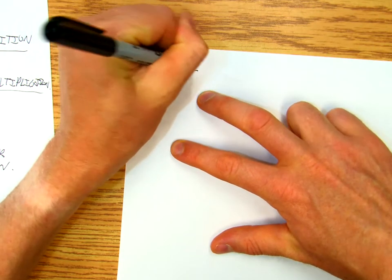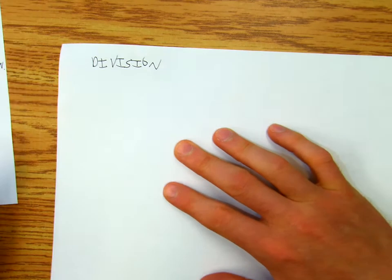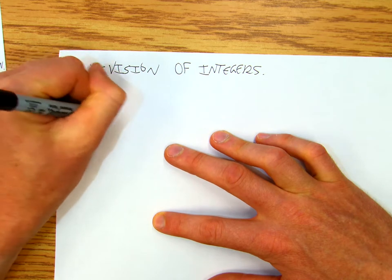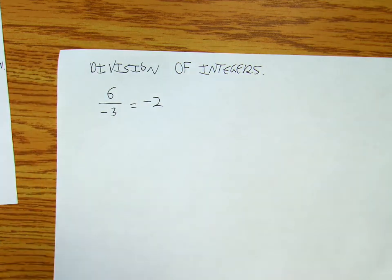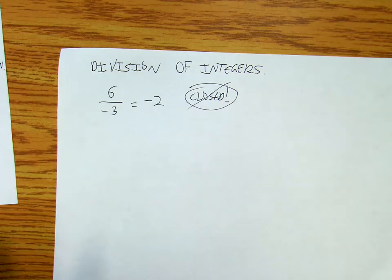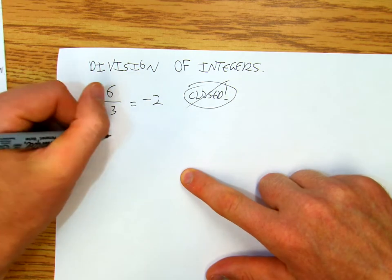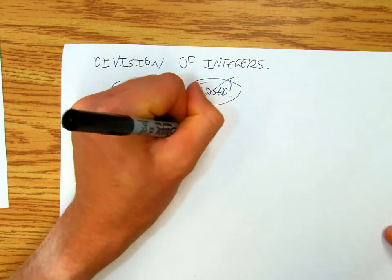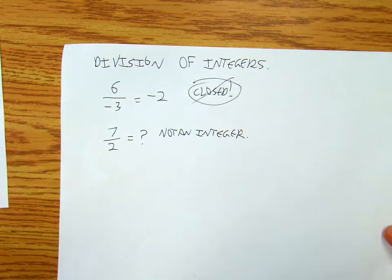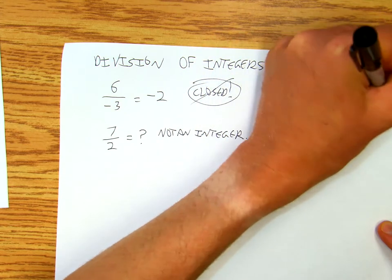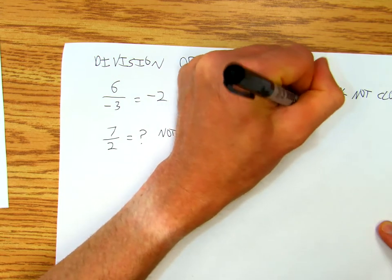Okay, so if I've got division of integers, 6 over negative 3 gives me negative 2. All set, closed. No, sorry, we can't just give one example and call it good. If I've got 7 over 2, what's that? That's not an integer. So integers are not closed under division.